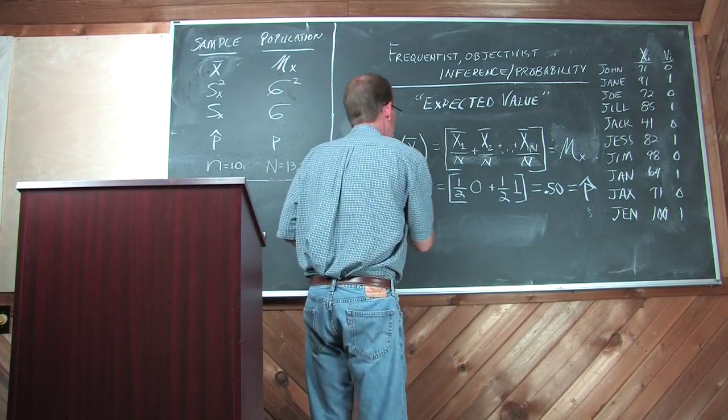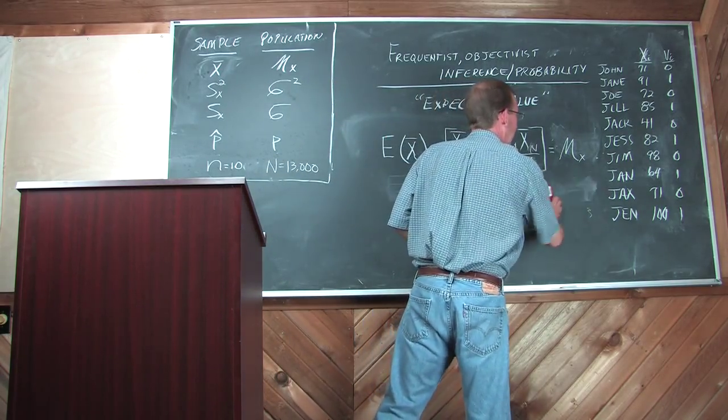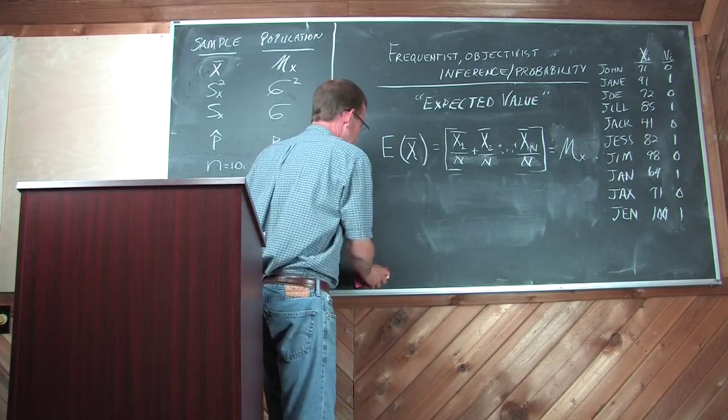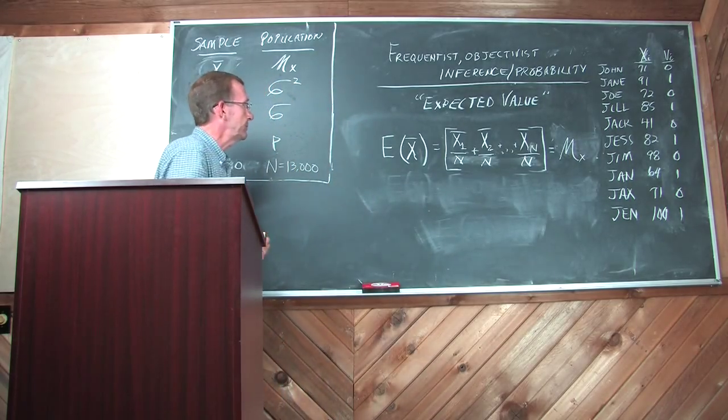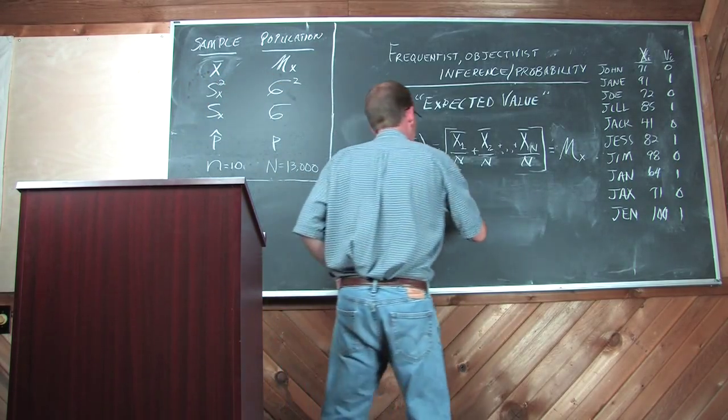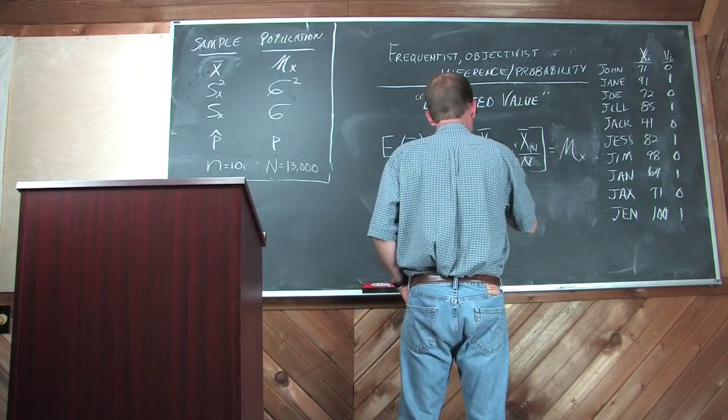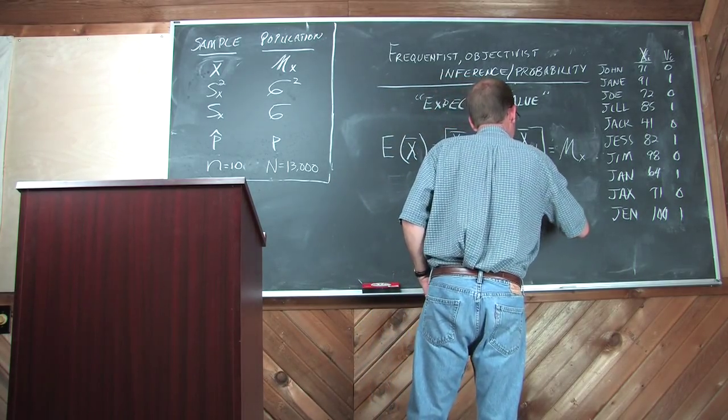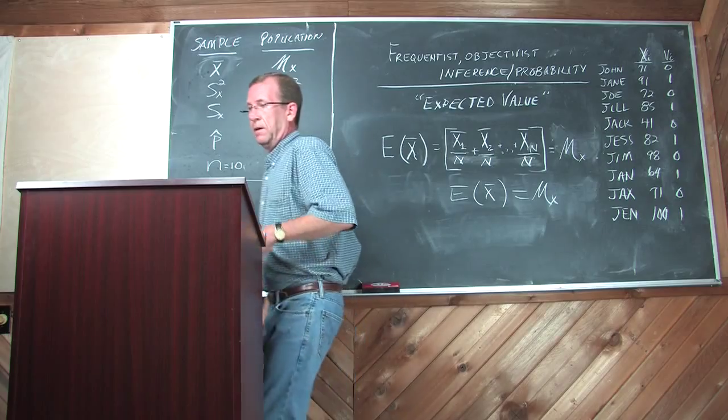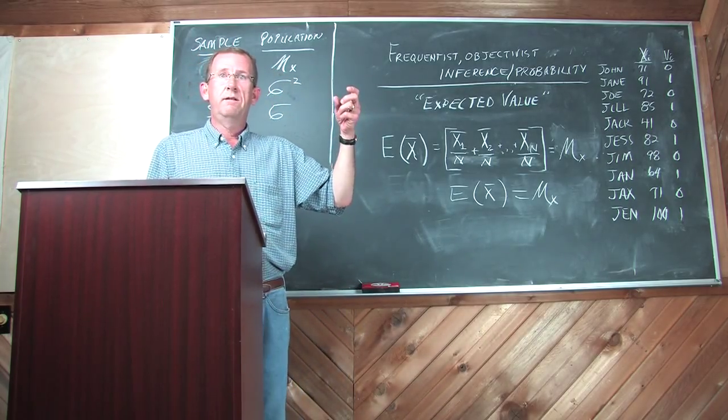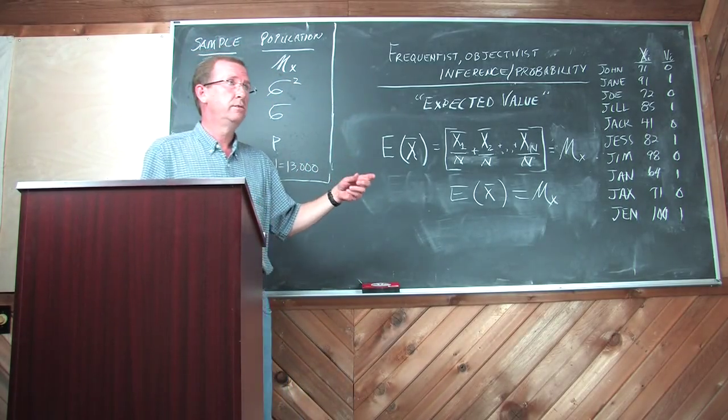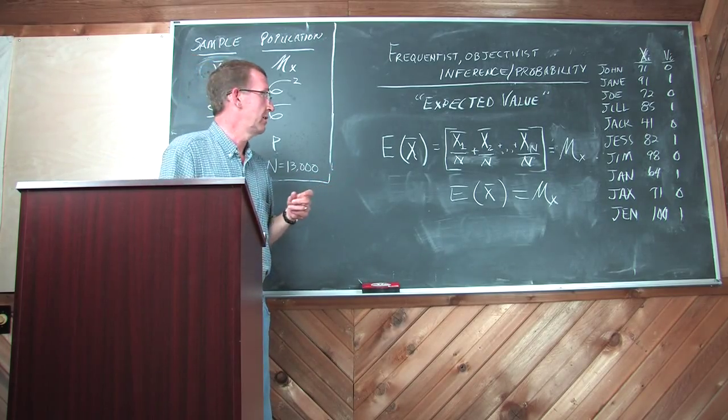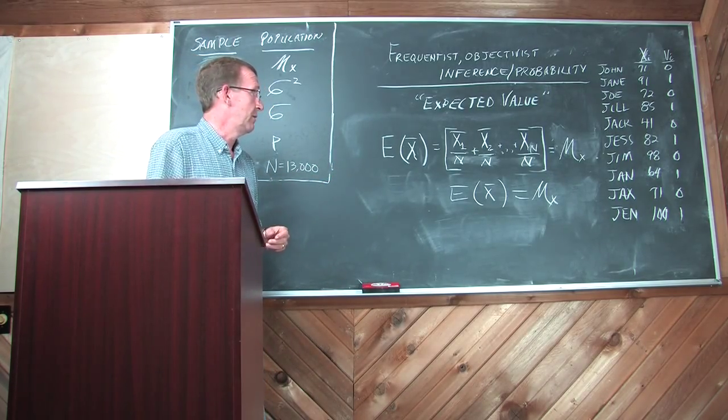I'm gonna move him for now. We're gonna come back to proportions. So now we've got this: the expected value of a sample mean is equal to the population mean, the one that you sought, the one that you sought to estimate.